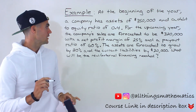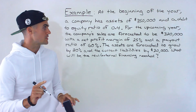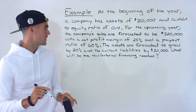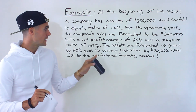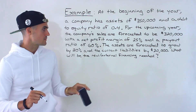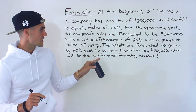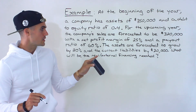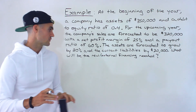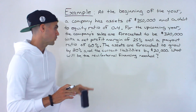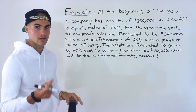For the upcoming year, the company's sales are forecasted to be $320,000 with a net profit margin of 25% and a payout ratio of 60%. The assets are forecasted to grow by 20% and the current liabilities by $20,000. We have to find out what the new or external financing needed will be.